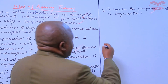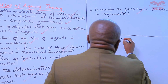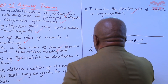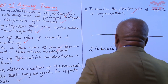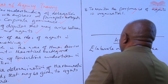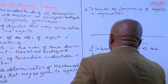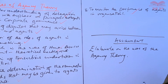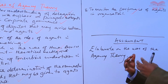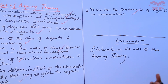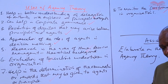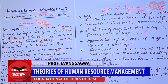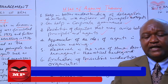Before we end the lesson, you have an assignment. Your assignment is to elaborate on the uses of the agency theory. After going through the topic covered today on agency theory, review the background of what we have done and be able to elaborate on the uses of the agency theory. Until we meet in our next lesson, thank you very much.